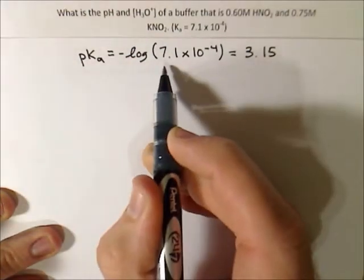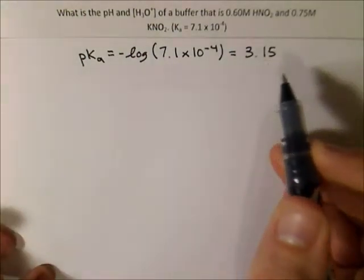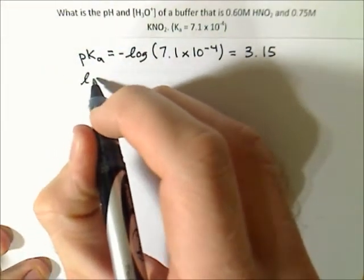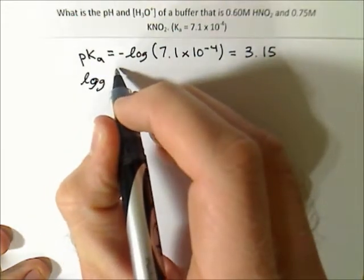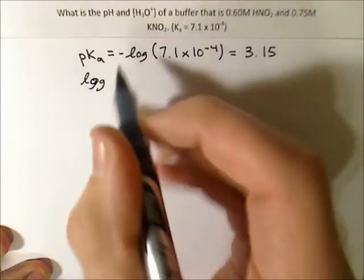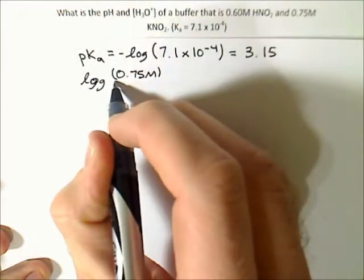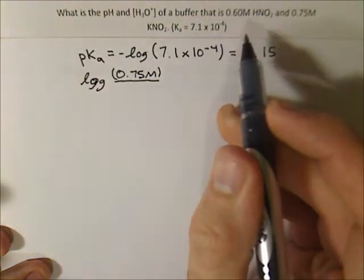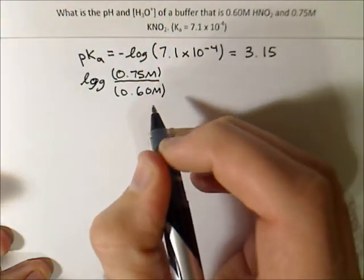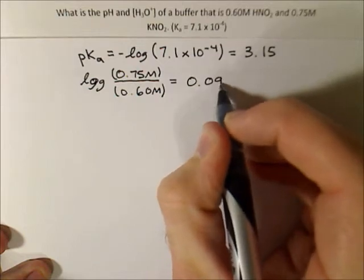And then checking significant figures, two significant figures there. Outside the logarithm, we should have two significant figures past the decimal. Checks out. And then we want to find the ratio of our acid to base. And concentration of our base, which is KNO2, at 0.75M. And the concentration of the acid is 0.60.